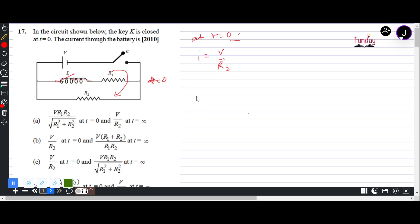So it will be V by R2. At t equals infinity, the inductor will act as a closed switch, as a short wire.